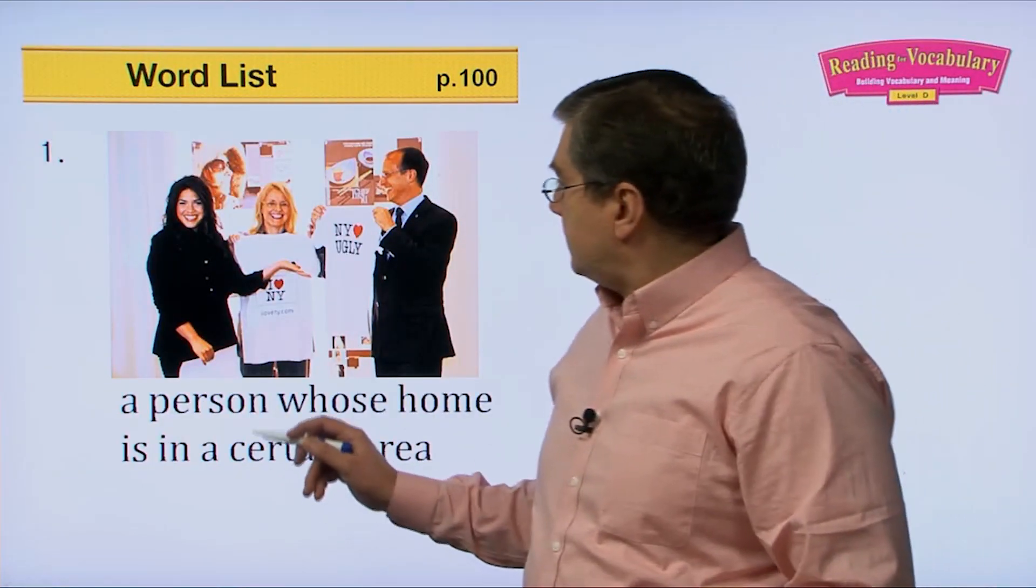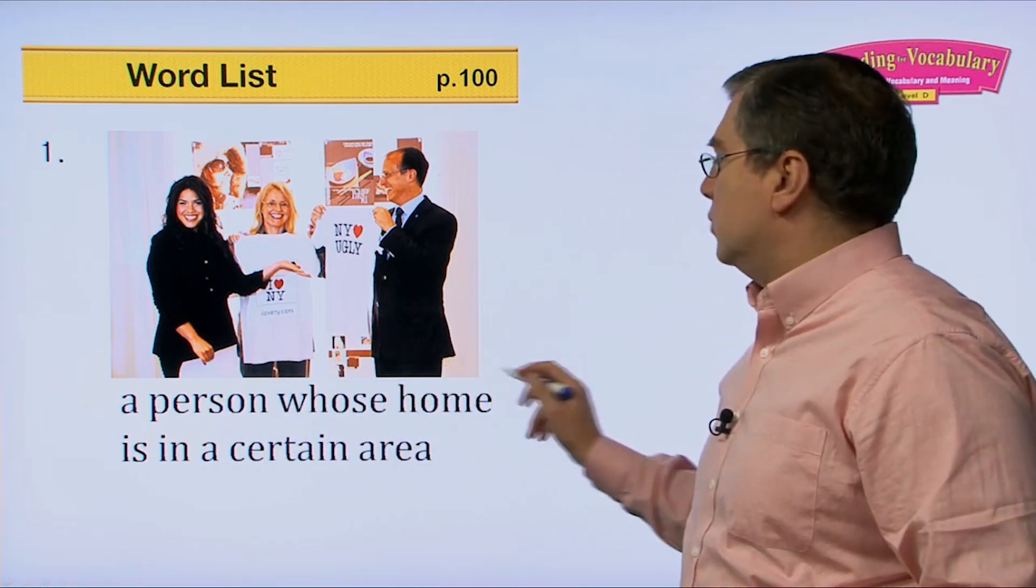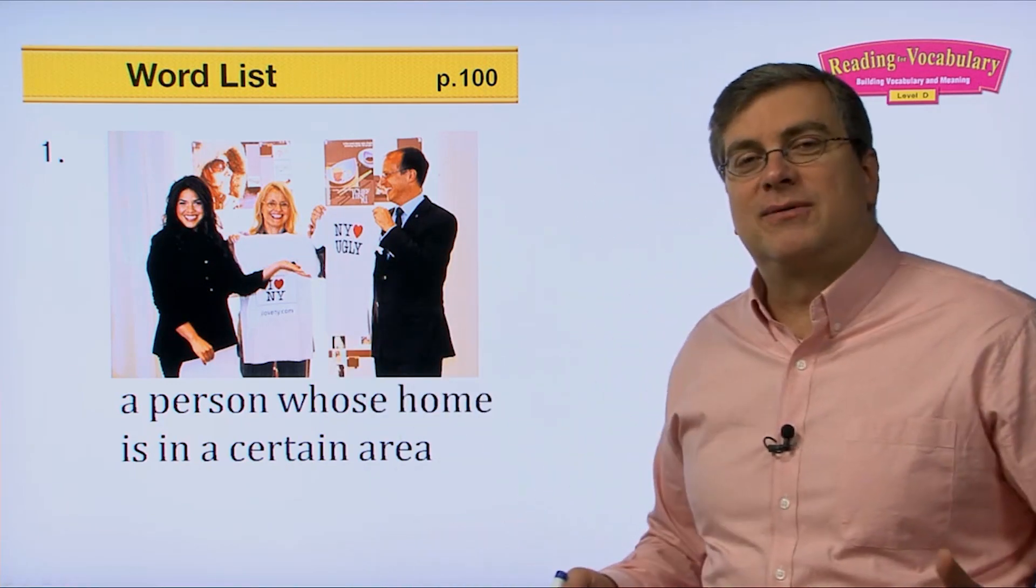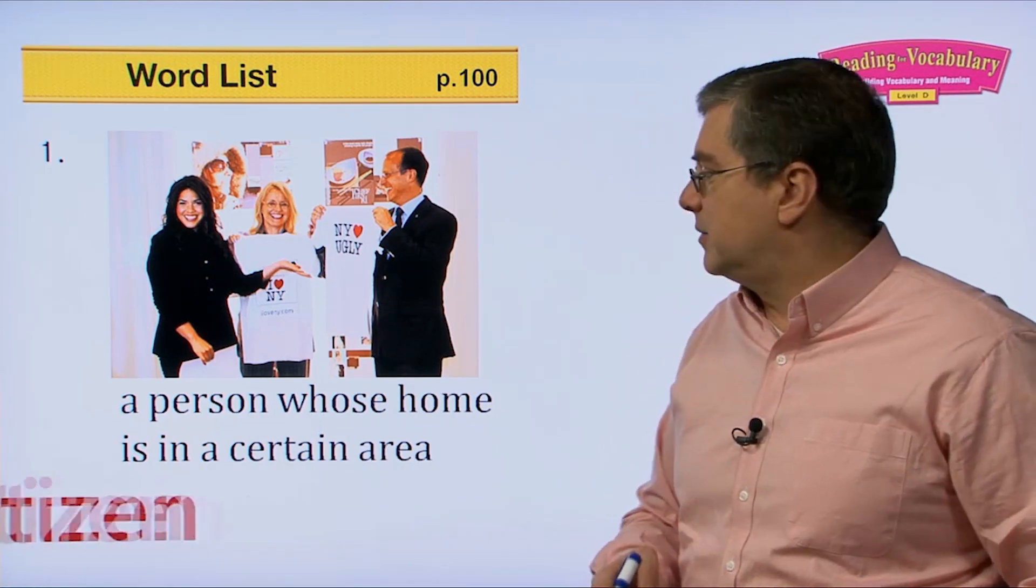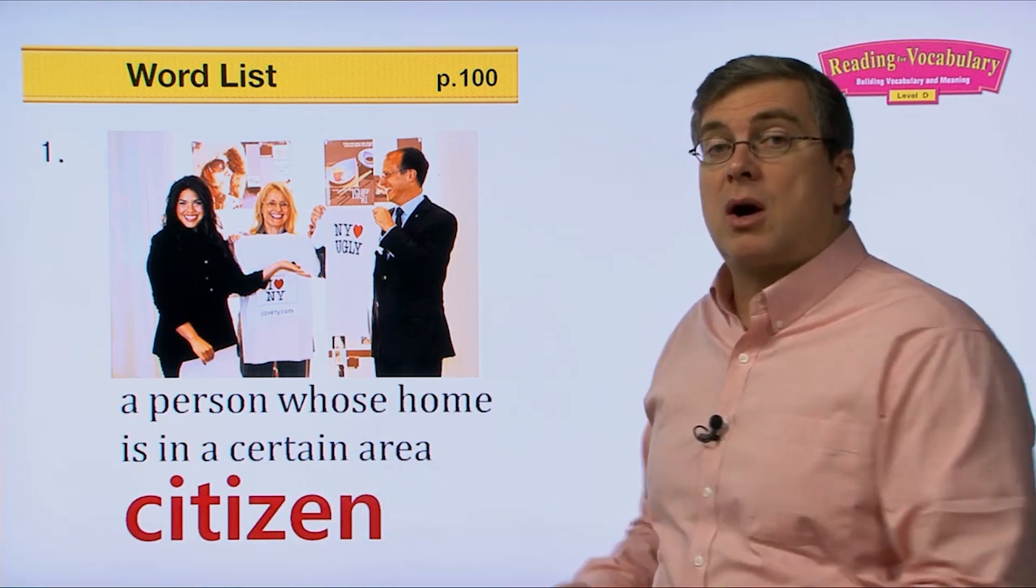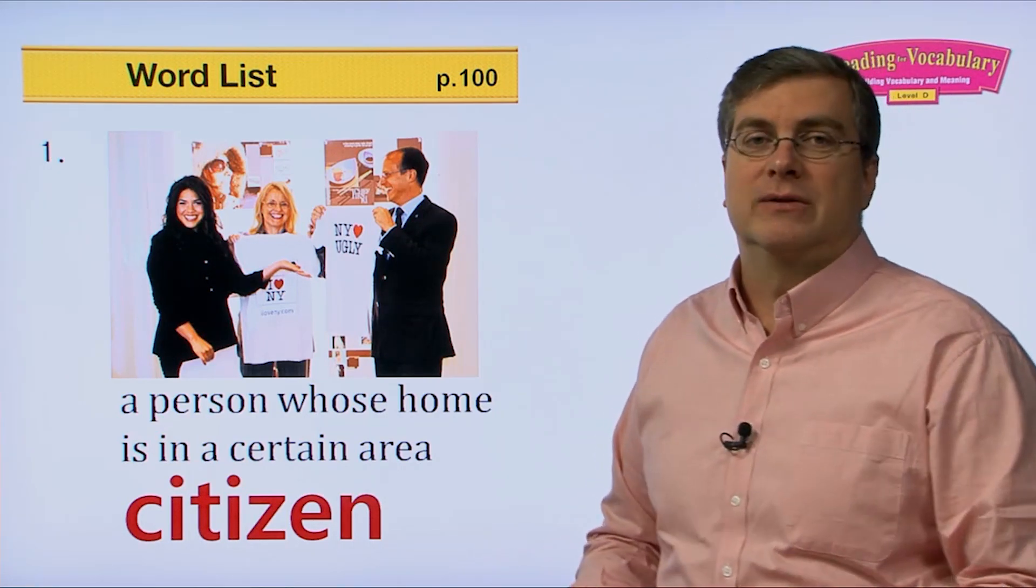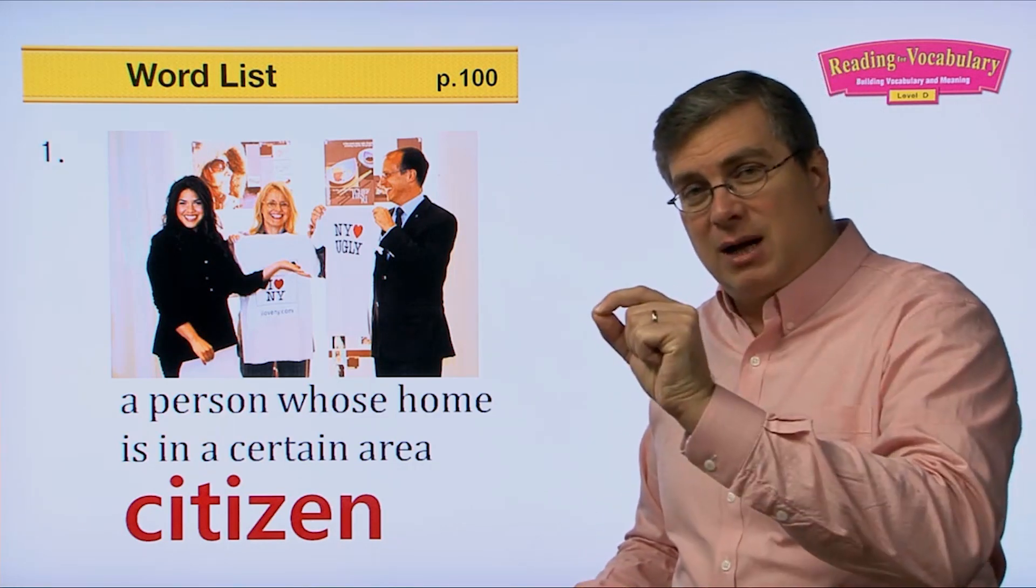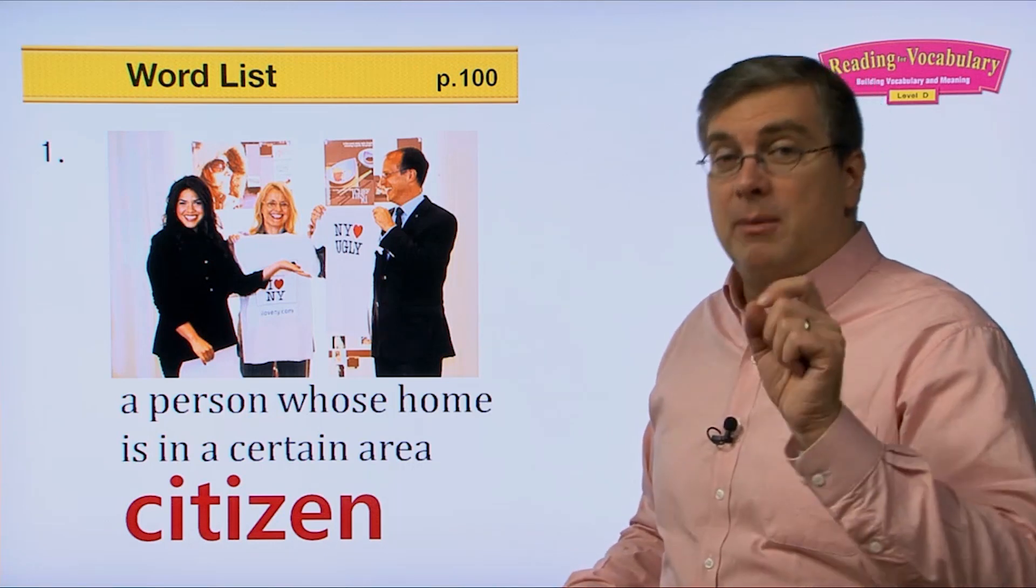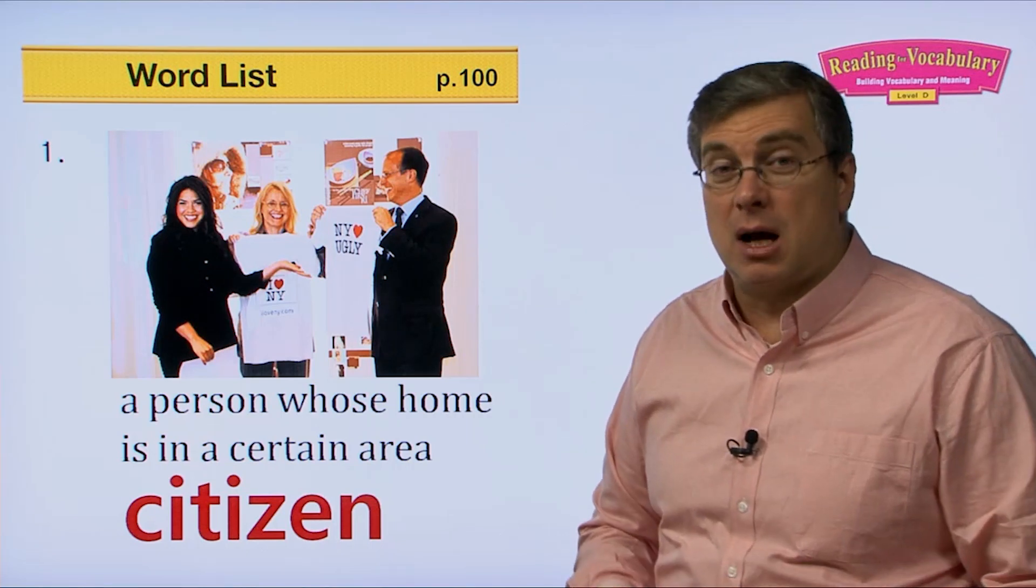Our first word is citizen. A person whose home is in a certain area. New York, of course, is a very famous town. They're very famous for their spirit. People who live in New York, they can call themselves citizens of New York. Usually though, we use citizen for country. For example, people who live in New York are citizens of America. They are American citizens. People who live in Seoul are usually Korean citizens. If your passport has the name of the country on it, you are a citizen of that country. If you have a Korean passport, you are a citizen of Korea. If you have an American passport, you are a citizen of America. And the same for every country in the world.